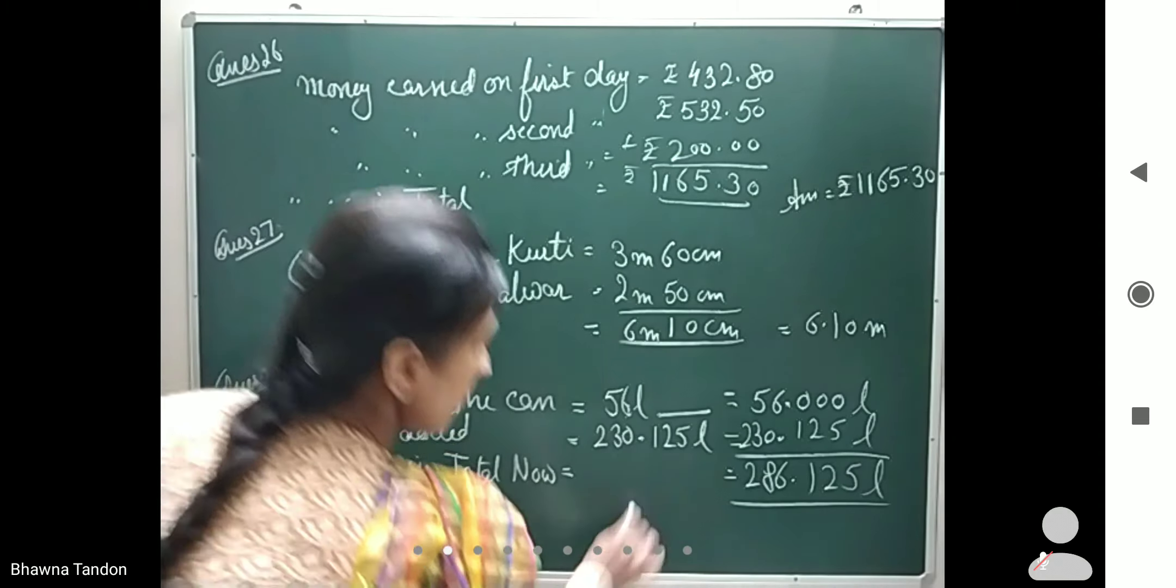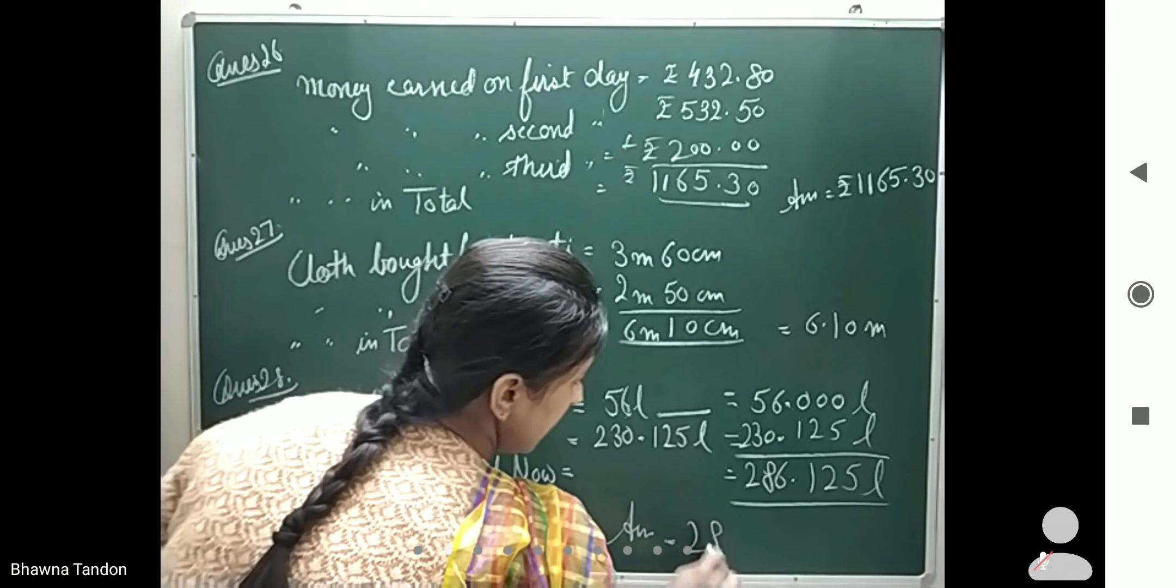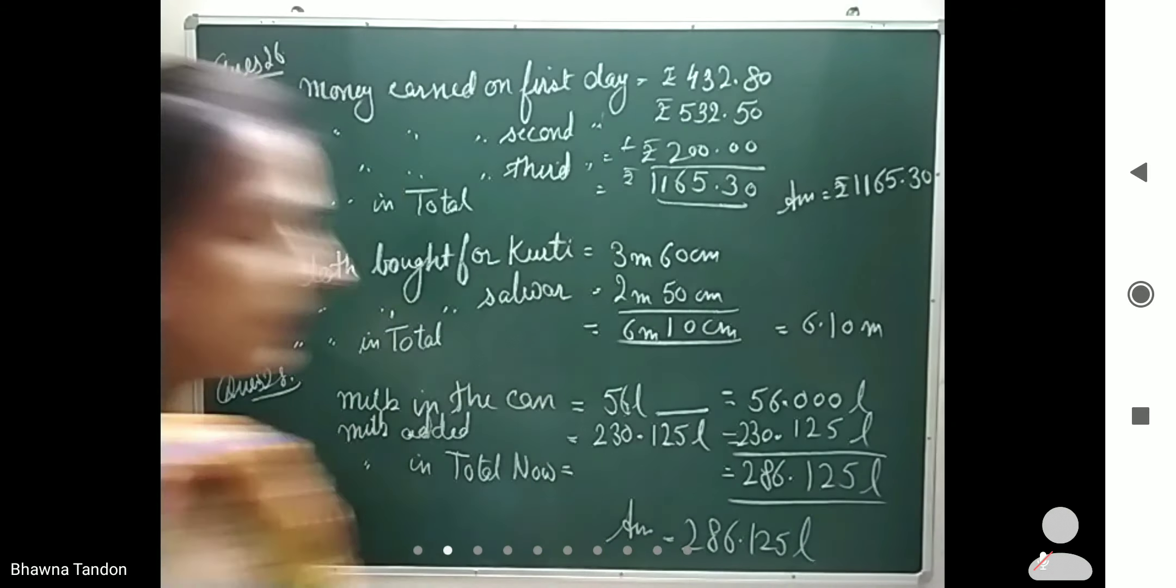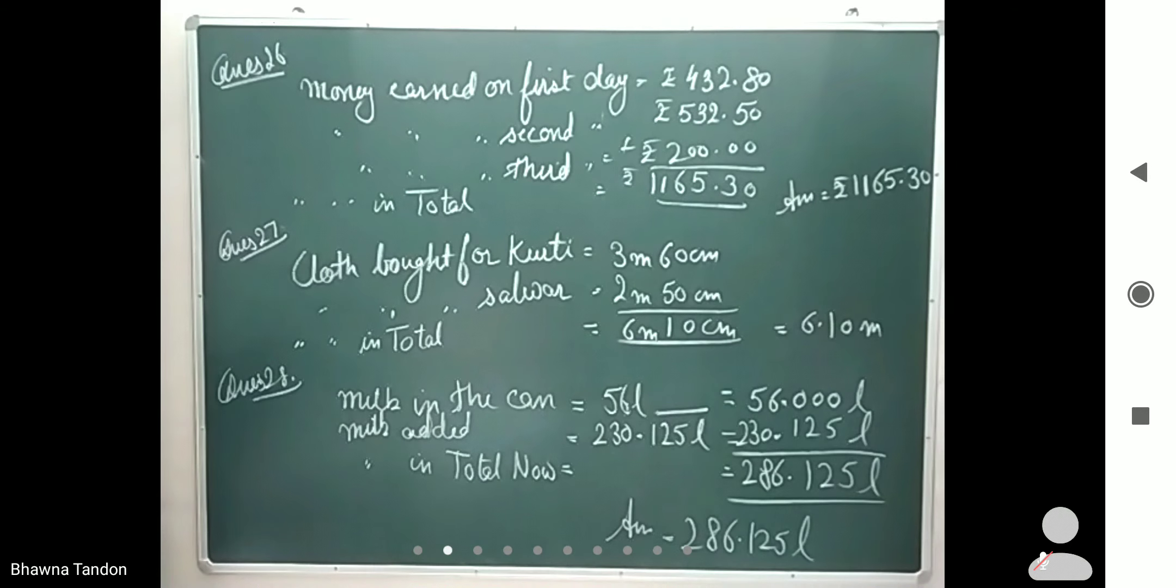So this is my answer: Milk now in the container after adding 230.125 liters is 286.125 liters.